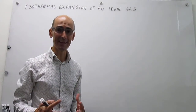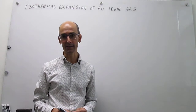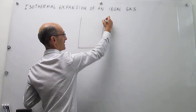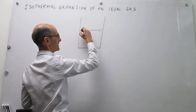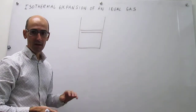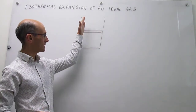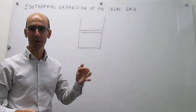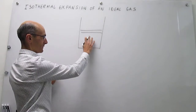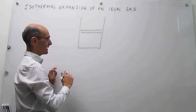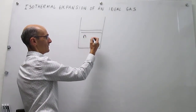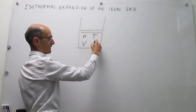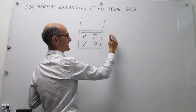This is going to be an expansion of an ideal gas. We're going to have an ideal gas inside a container that has a movable piston. This can move up and down, and that means that you can do work or apply work on the system. This is an ideal gas and you have a number of moles, some temperature, a volume, and a pressure — that is the physical state.